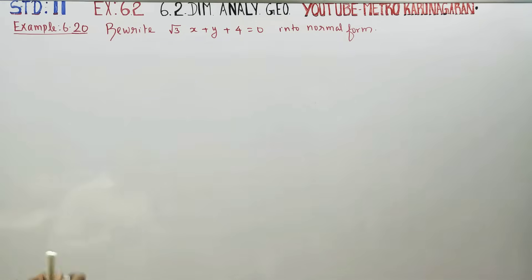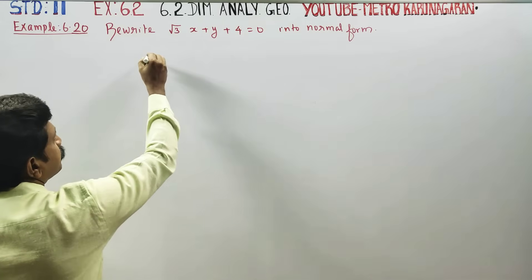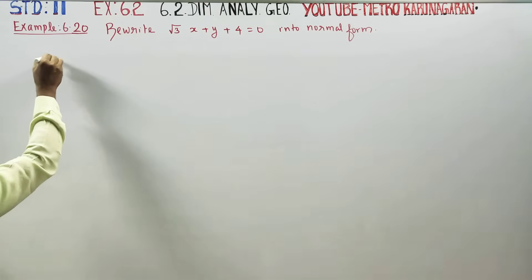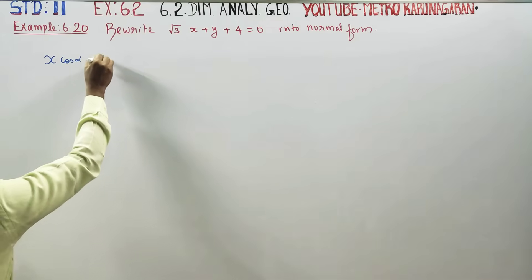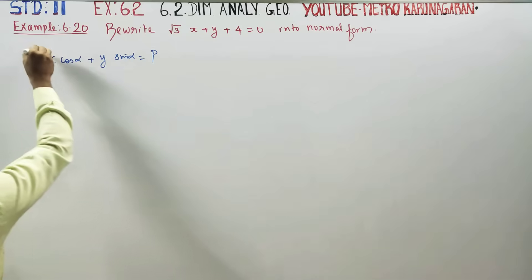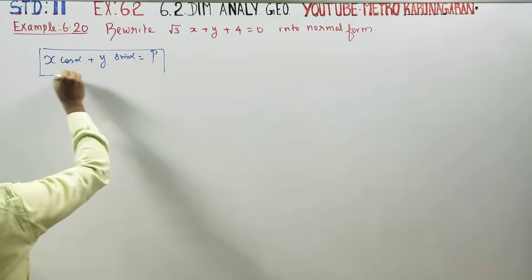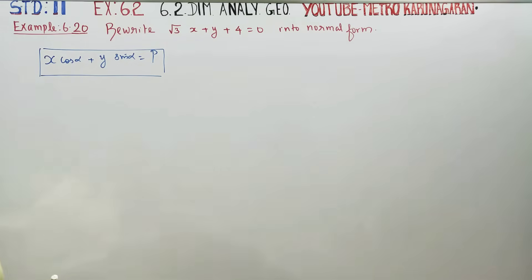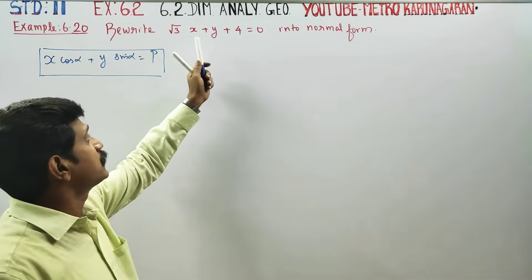What is the meaning of normal form? In the equation, x cos α plus y sin α is equal to p — this style is the normal form of the equation. So, in this case, cos α and sin α satisfy this form with p.